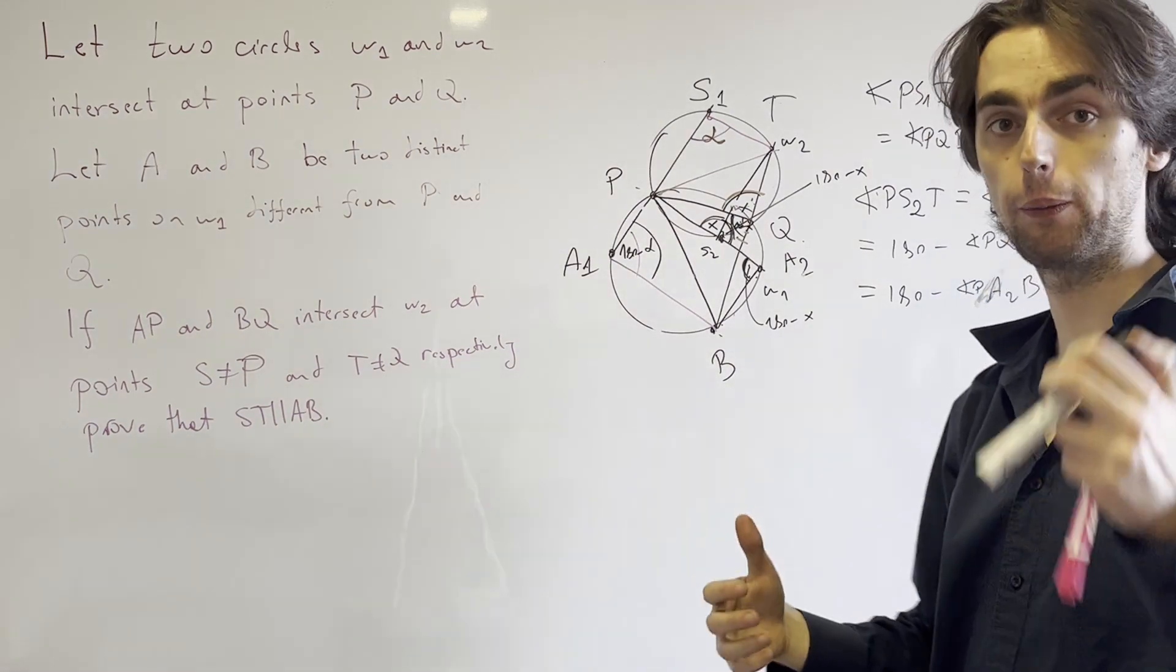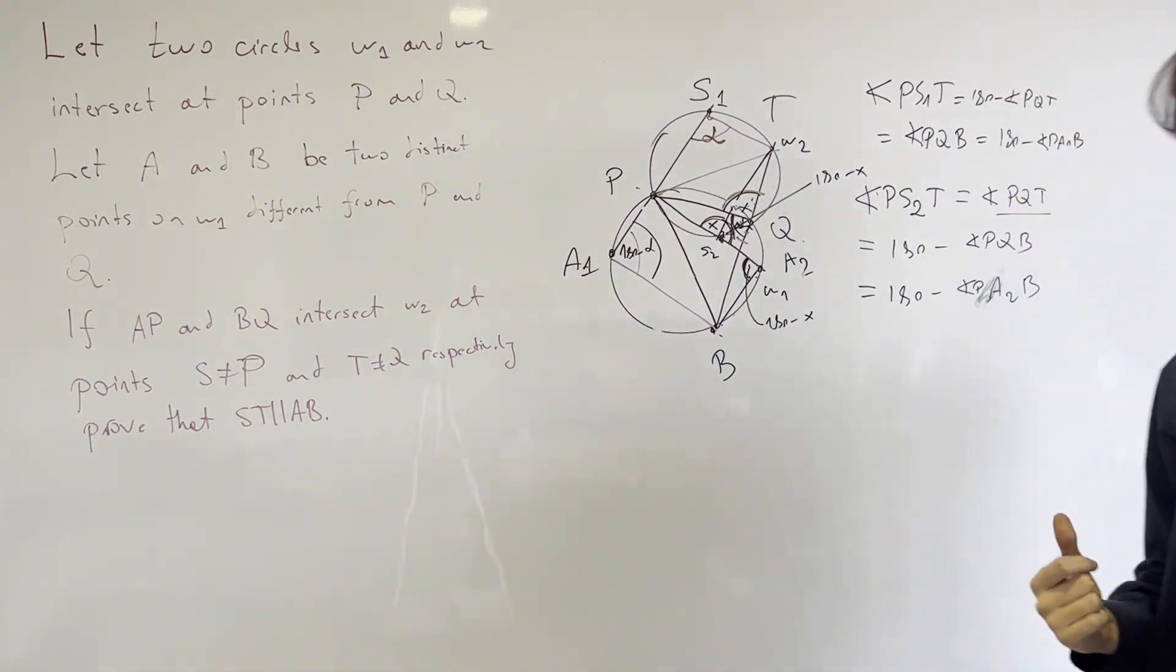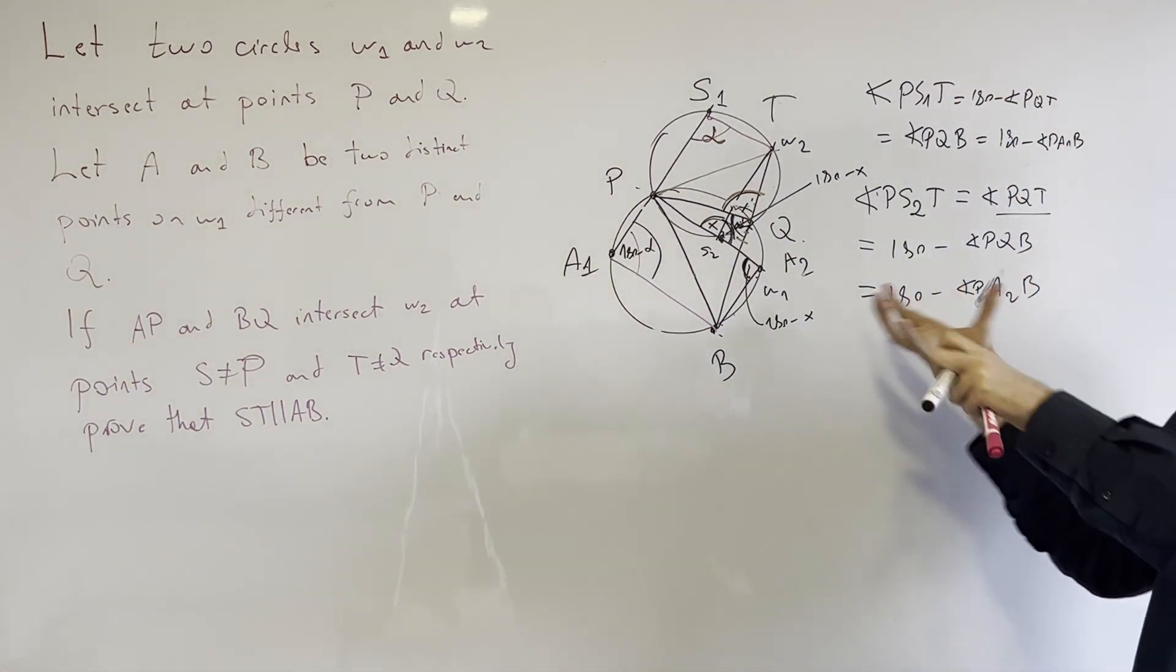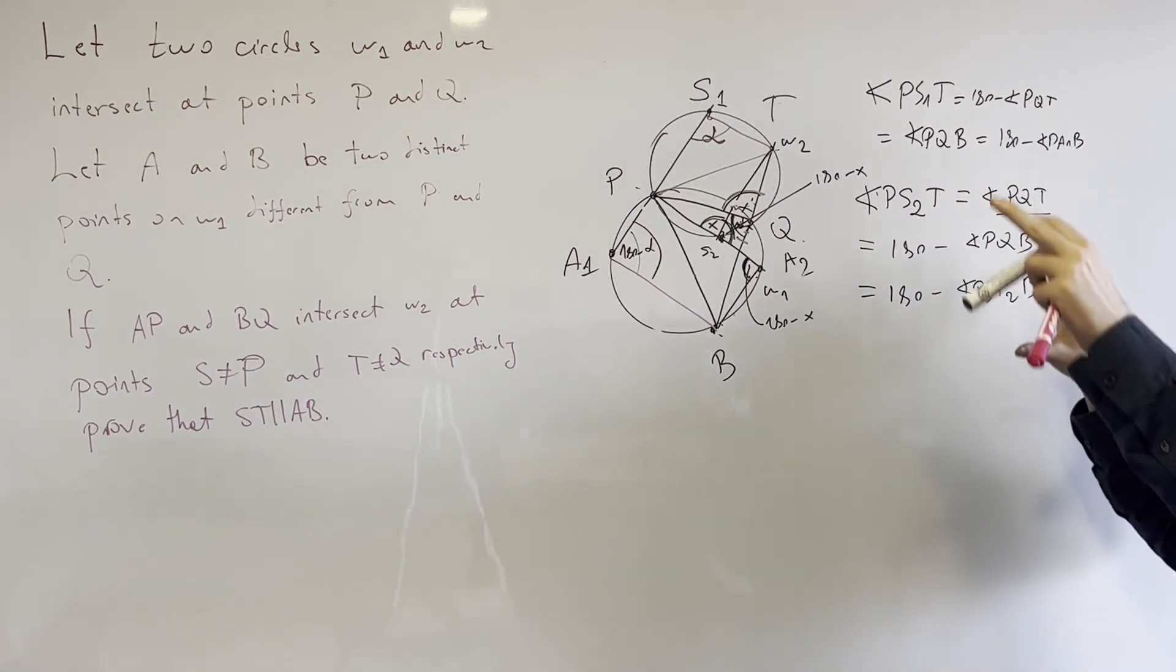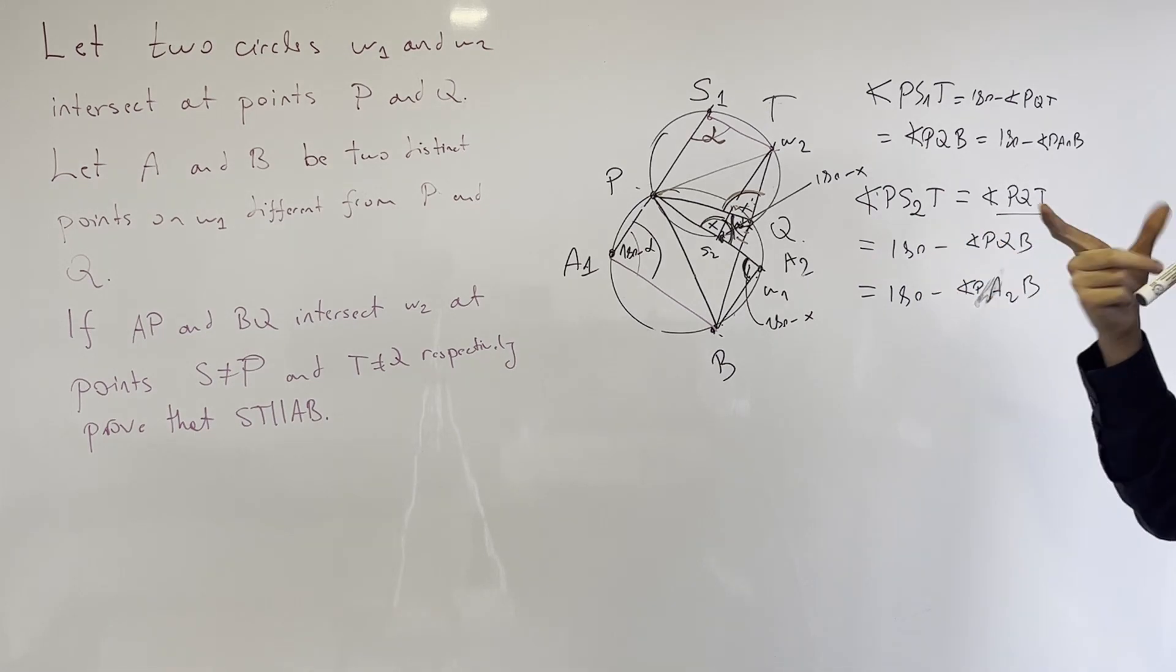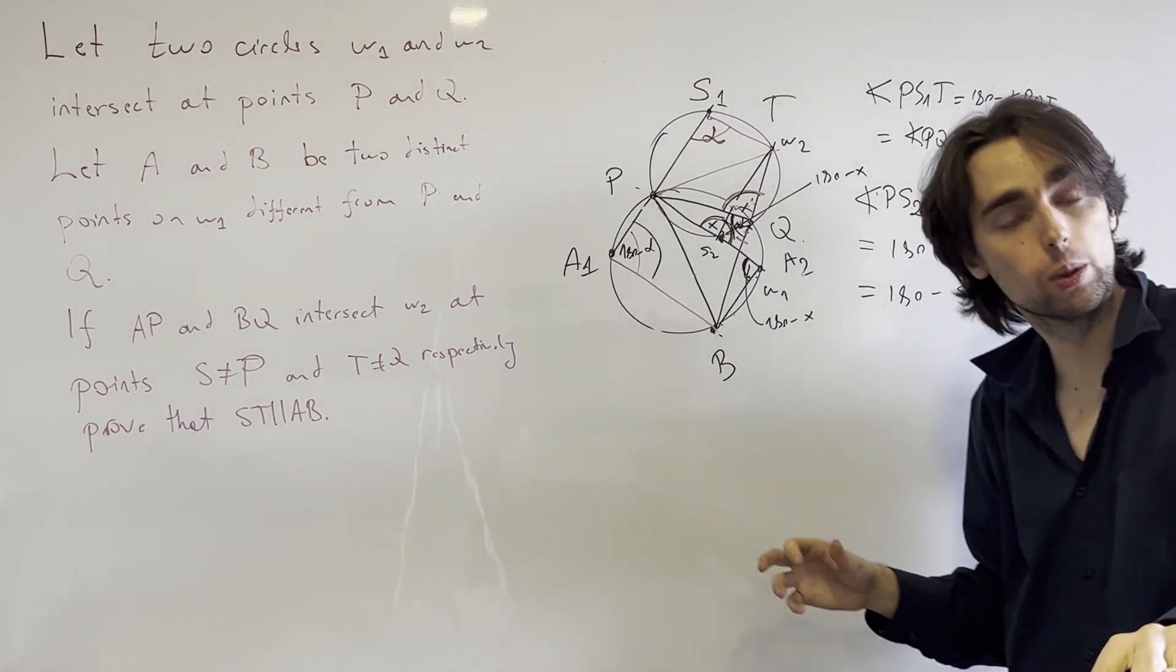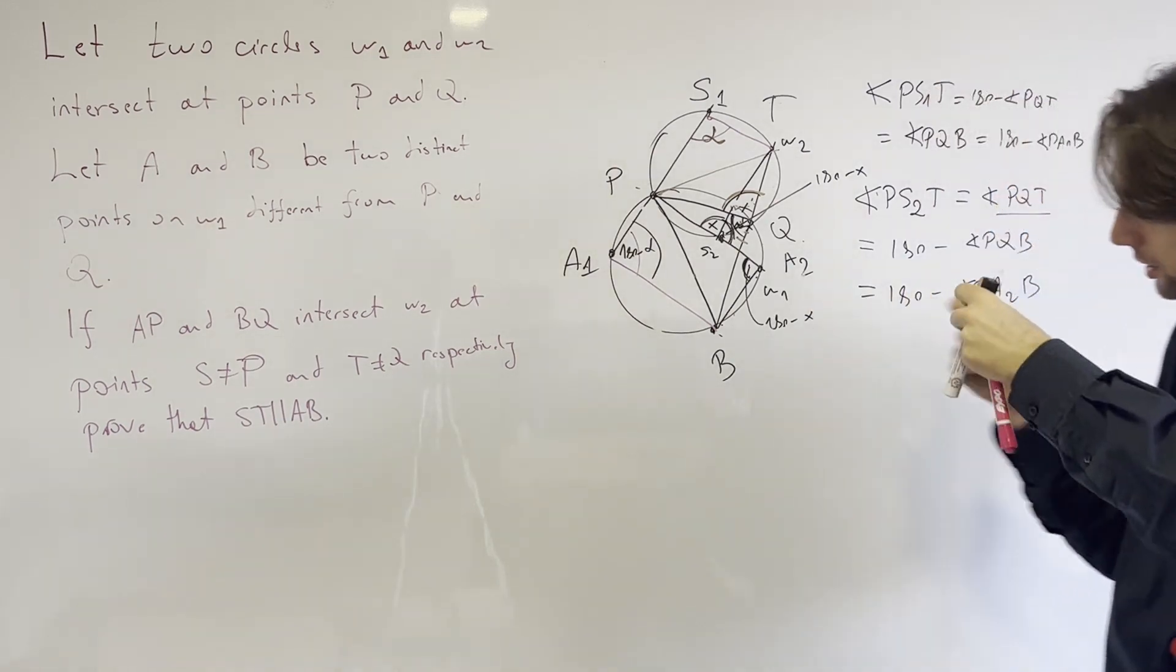This shows how we can angle chase in geometry when we have cyclic points. And even if you have different configurations as you do in this problem, usually you just need to modify the points a little bit, not always, but you just need to modify them a little bit here.